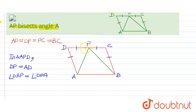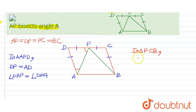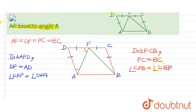Also, in triangle PCB, PC equals BC. That implies angle CPB should be equals to angle CBP. Therefore these two angles should be equal.